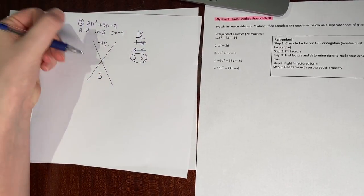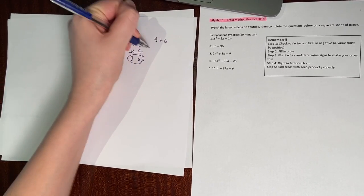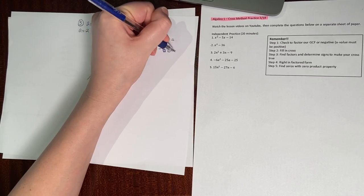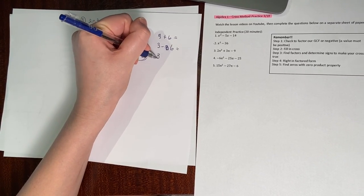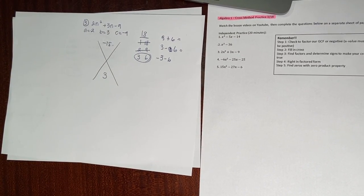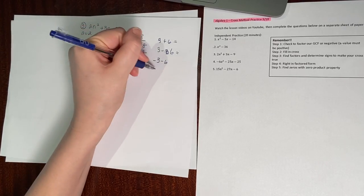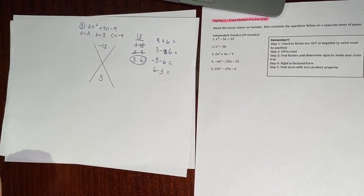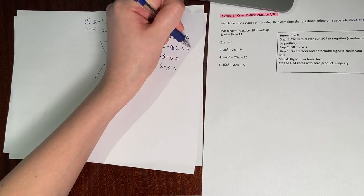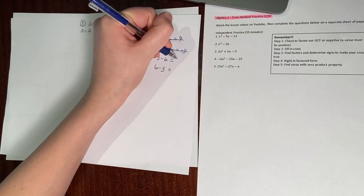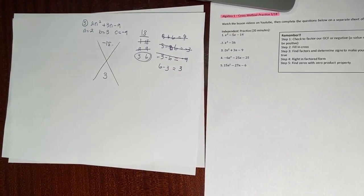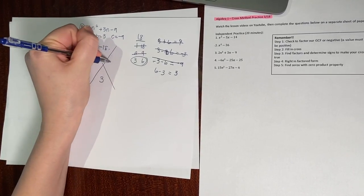Let's play around with signs to get positive 3. 3 plus 6 gives me 9 — out. 3 minus 6 gives me negative 3 — out. Negative 3 minus 6 gives me negative 9 — out. 6 minus 3 is the only one that works, giving me positive 3. So I fill in positive 6 and negative 3.